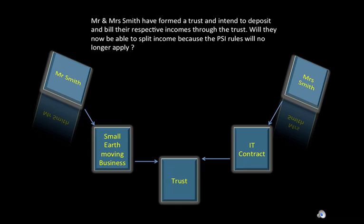Division 84-86 of the Income Tax Assessment Act 1997, the PSI rules, and Part 4A of the Income Tax Assessment Act 1936, better known as the tax avoidance rules.